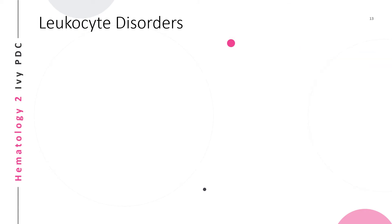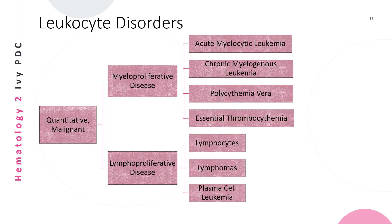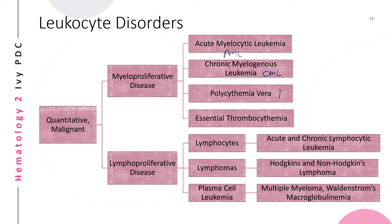The second category is quantitative and malignant, divided into myeloproliferative and lymphoproliferative diseases. Myeloproliferative diseases include acute myelocytic leukemia (AML), chronic myelogenous leukemia (CML), polycythemia vera, and essential thrombocytosis — involving white blood cells, red blood cells, and platelets. Lymphoproliferative diseases involve mainly lymphocytes and are classified into lymphomas and plasma cell leukemia.